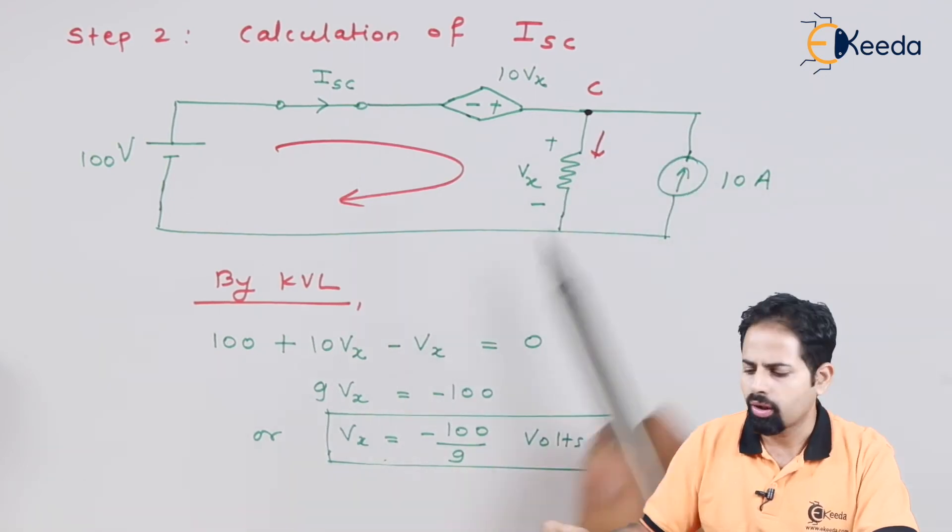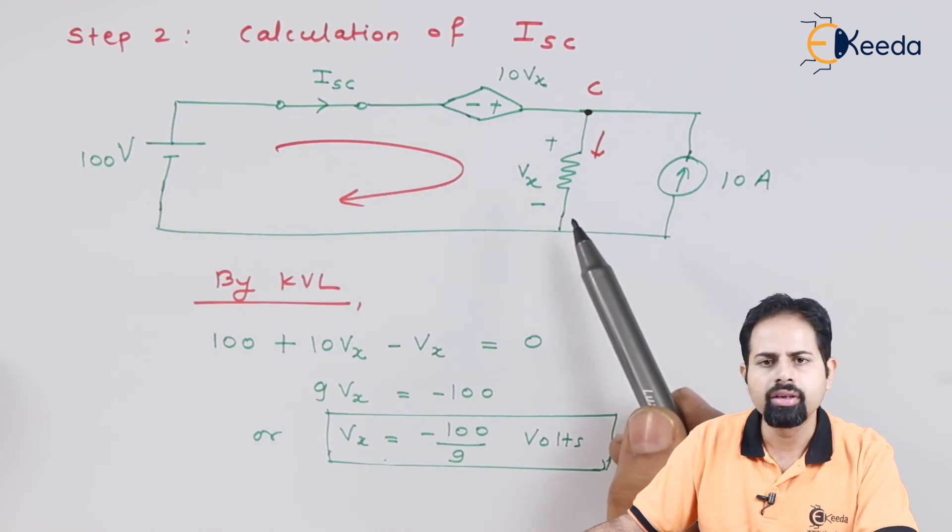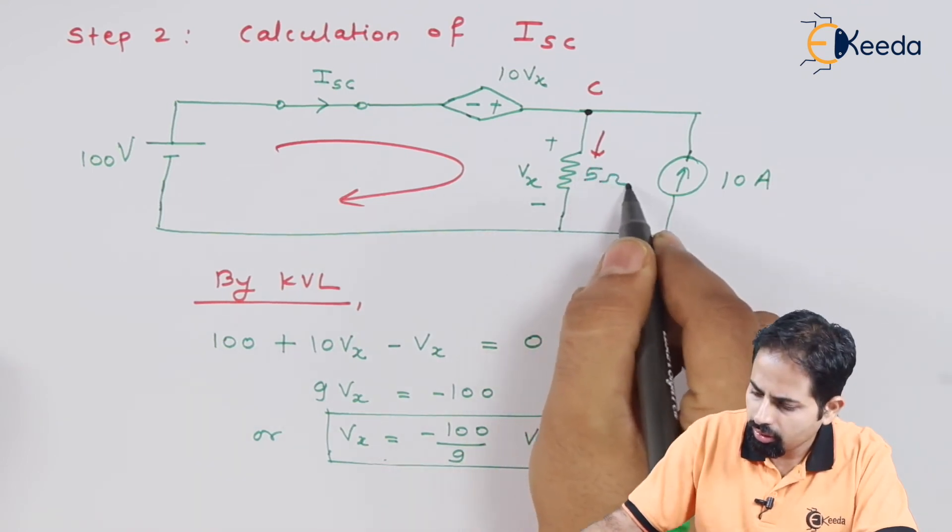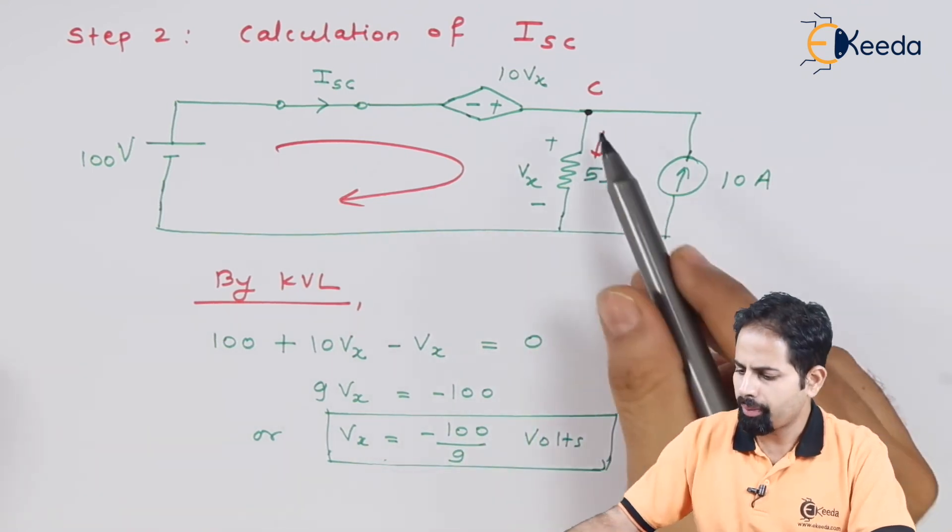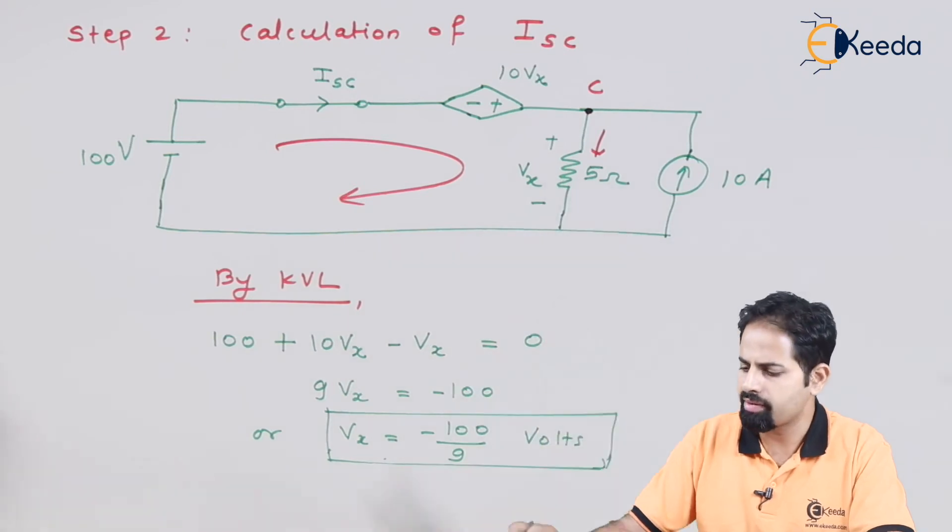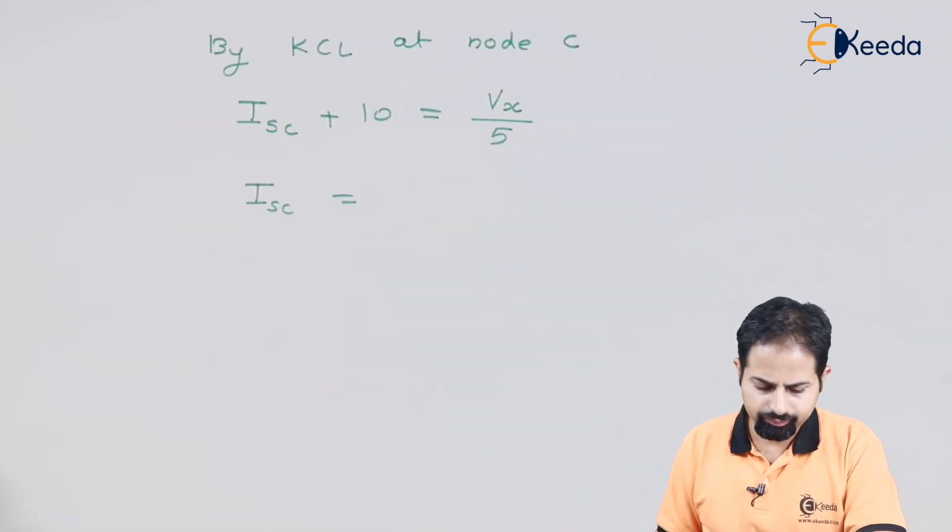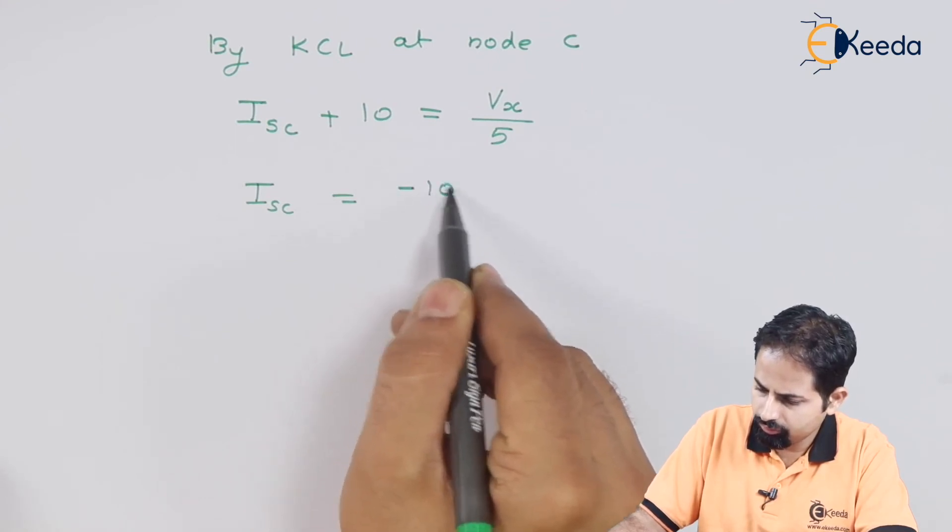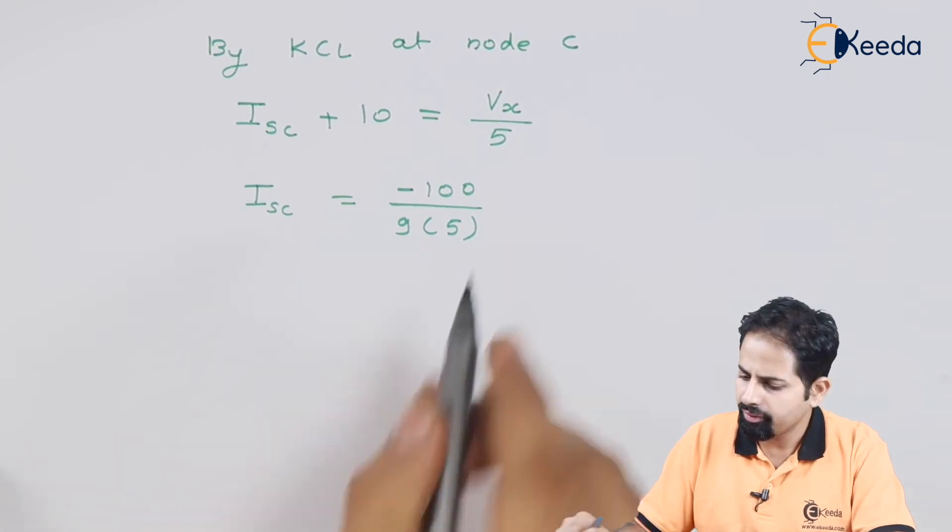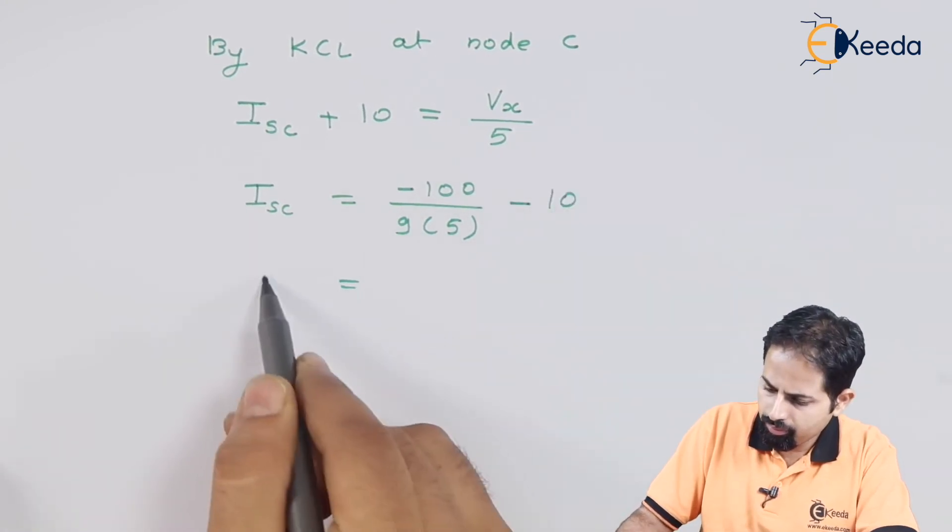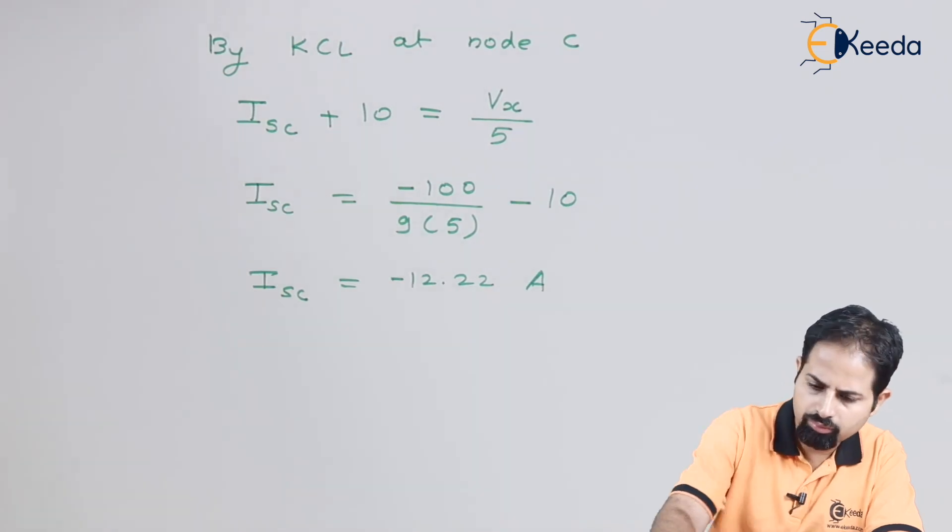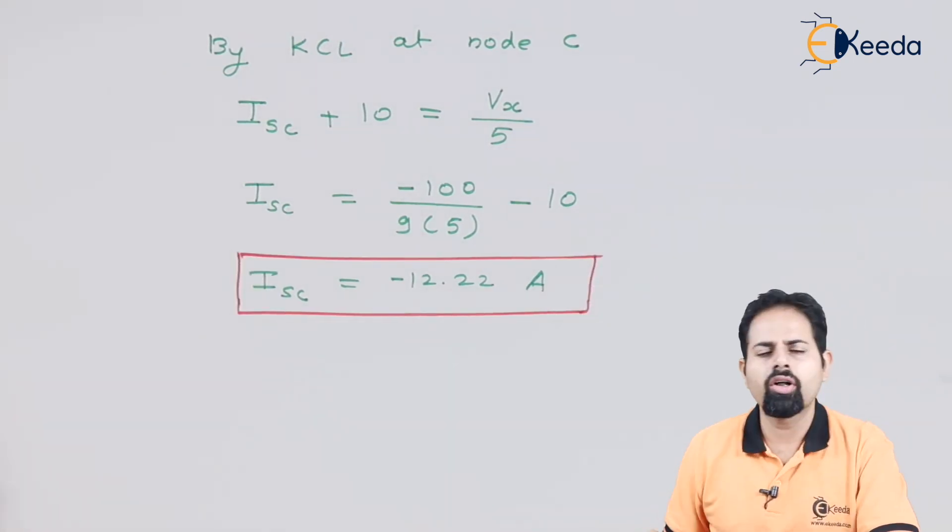and the value of this resistance which is 5 ohms. So we will apply KCL at node C. This is what we get. Outgoing current as voltage upon resistance that is Vx divided by 5. Now the value of Vx we have got that is minus 100 by 9. So let's calculate it.